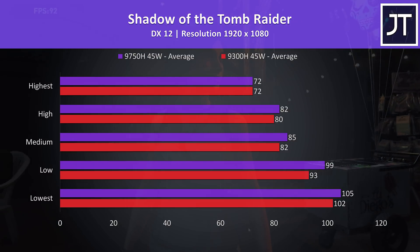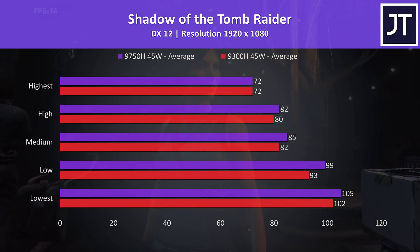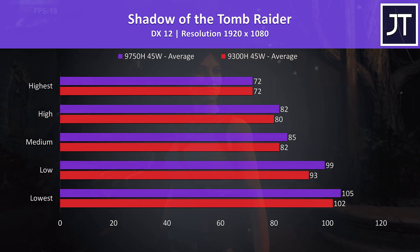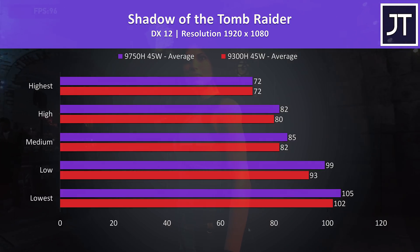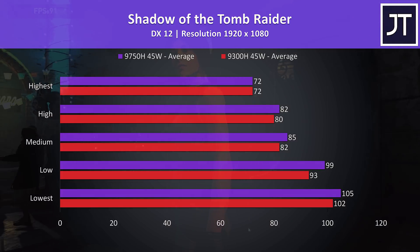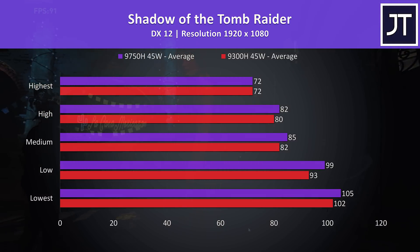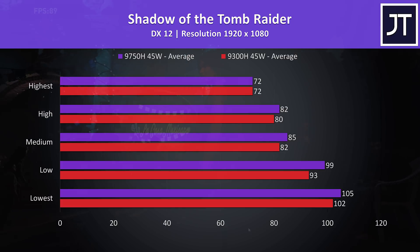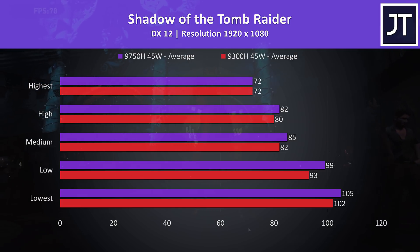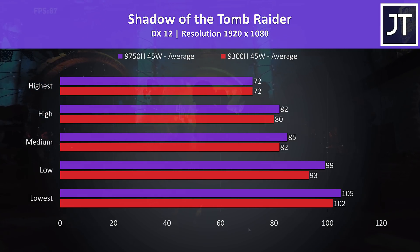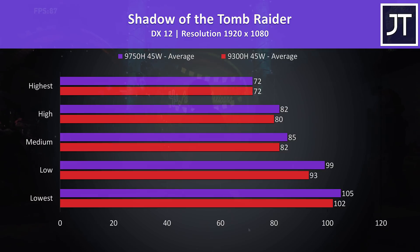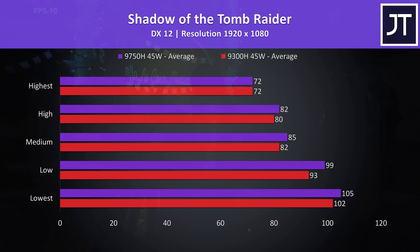Shadow of the Tomb Raider was tested using the built-in benchmark. The i7 was ahead in all tests, although by the time we step up to highest settings the result was identical, likely as we're more GPU bound at this stage. At lowest settings the i7 was just 3% faster than the i5.